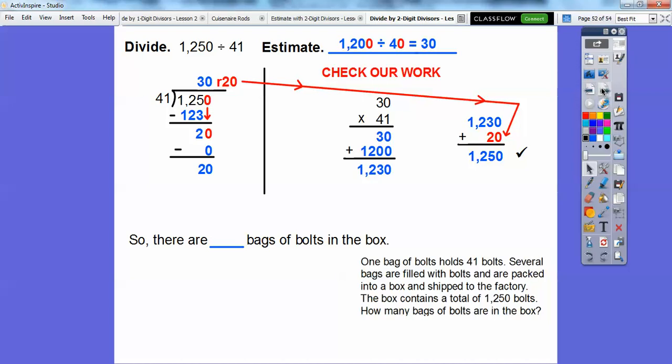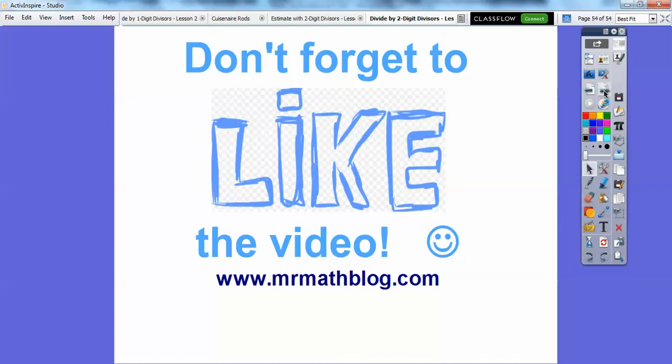You don't have to do that unless the textbook or your teacher asks you to do that. How many bags are there? Let's answer the question. The box contains a total of 1,250 bolts and each bag holds 41 bolts. There are 30 bags with some remainders right there. How many bags do we need? It's going to fill up 30 full bags plus we need another bag for this remainder stuff. That means there's going to be 31 bags all together. Does that make sense? This remainder means we have to add it for another bag. We've got to carry the remainder pieces right there. I hope that makes sense and take care.